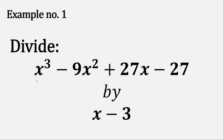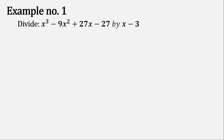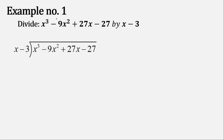Let's try it with example number 1. We divide this polynomial by this polynomial. The first step is to arrange the dividend into standard form. Let's check the exponent of each variable — we have 3, 2, 1, and x raised to 0. They are already in descending order from 3, 2, 1, and 0. So our dividend is in good order. We plot it into our division sign with the dividend inside and the divisor outside.